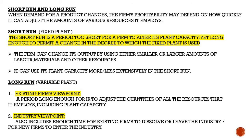In the short run, the firm has a fixed plant because the period is too short to change plant capacity. The short run is a period too short for a firm to alter its plant's capacity, but long enough to permit a change in the degree to which the fixed plant is used — you can use your plant either less extensively or more extensively.